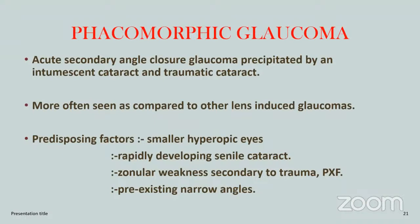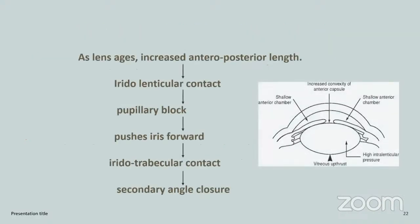Phacomorphic glaucoma is acute secondary angle-closure glaucoma precipitated by intumescent cataract and traumatic cataract. It is more often seen compared to other lens-induced glaucomas. Predisposing factors include smaller hyperopic eye, rapid developing senile cataract, zonular weakness secondary to trauma and pseudoexfoliation, and pre-existing narrow angle. Pathophysiology: the lens increases in anteroposterior length, causing iridolenticular contact, pupillary block, secondary iridotrabecular contact, and secondary angle-closure glaucoma.